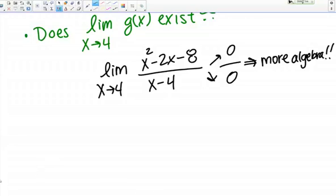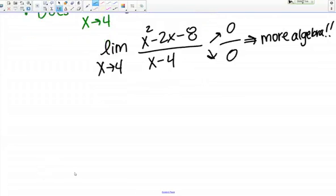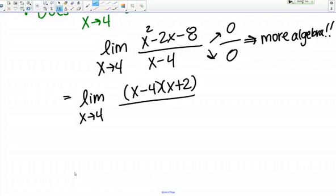Now this problem, being a rational function, looks like it would be a good candidate for factoring. So let's try and factor the numerator. So I see that this is going to factor into x minus 4, x plus 2, and then of course I still have x minus 4 on the bottom. So I see I have a common factor in the top and bottom, so I'm going to cancel out that factor.